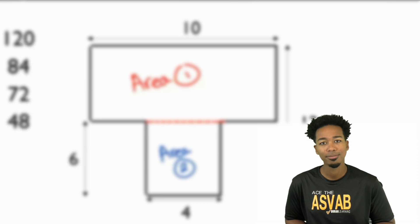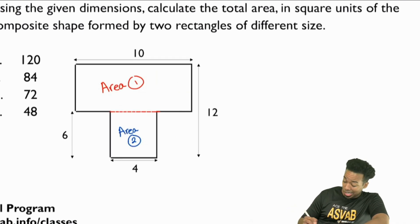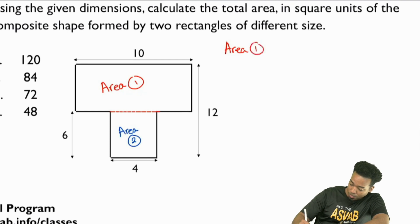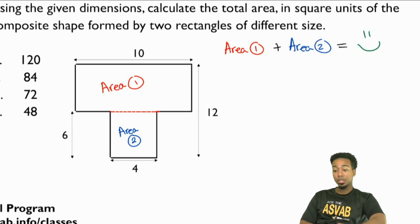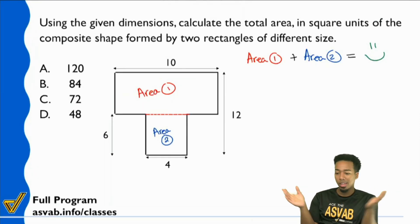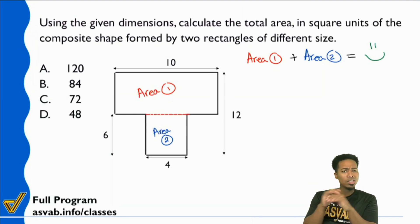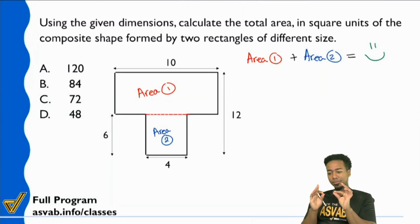Let's get back to the video and ace the ASVAB. If we find those areas, our final answer is going to be: take the area of section one, add it with the area of section two, and that's our answer. All we're trying to do is find the total area. Find the area of the first part, area of the second part, add them up, and we're set. Even if we have no idea how to do it, that's the goal at the very least.